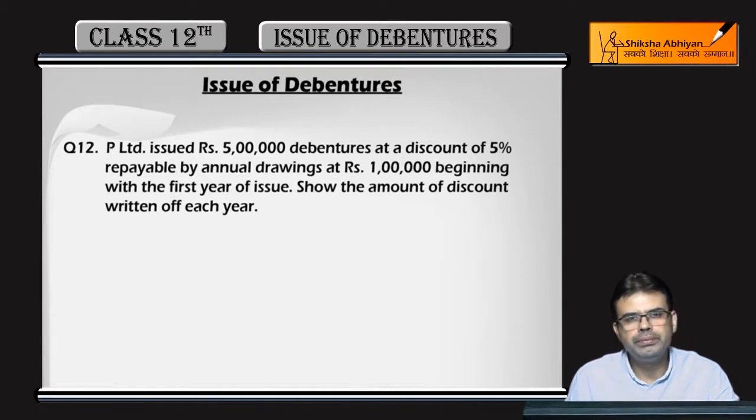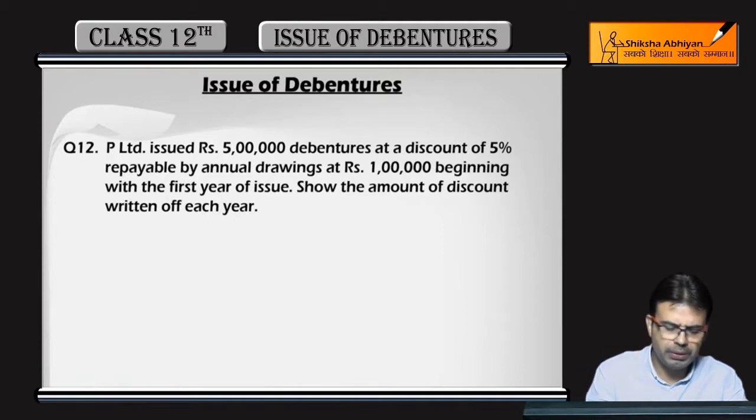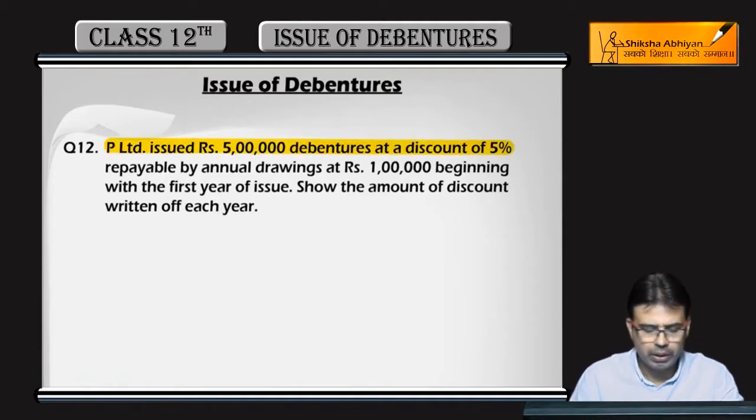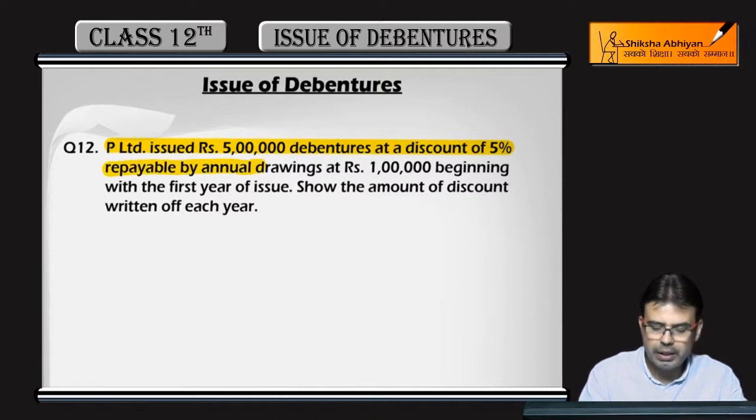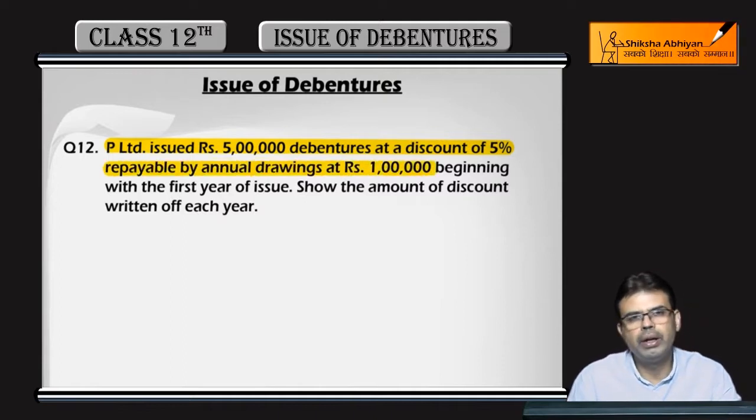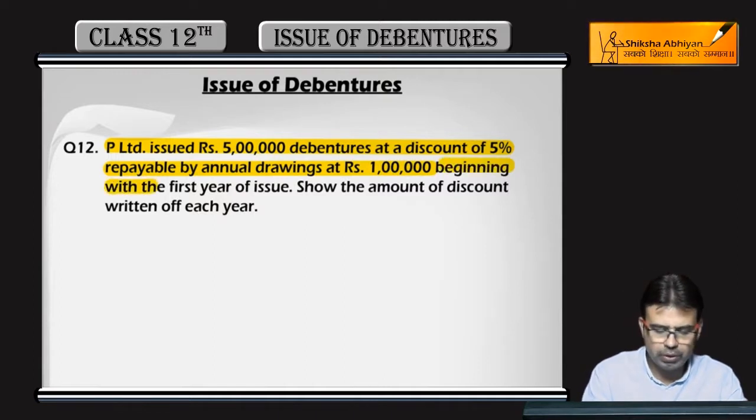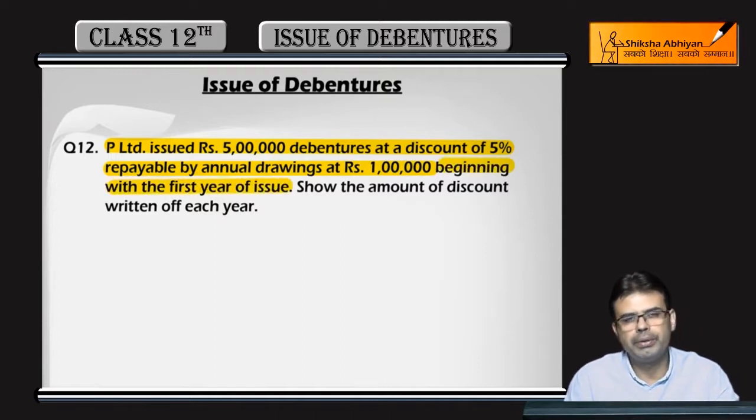Now the next question in which every year we have to do equal amount of discount write-off when the debentures will be redeemed in installments. P Ltd. issued Rs. 5,00,000 debentures at a discount of 5% repayable by annual drawings of Rs. 1,00,000 beginning with the first year of issue. Every year Rs. 1,00,000 will be redeemed.